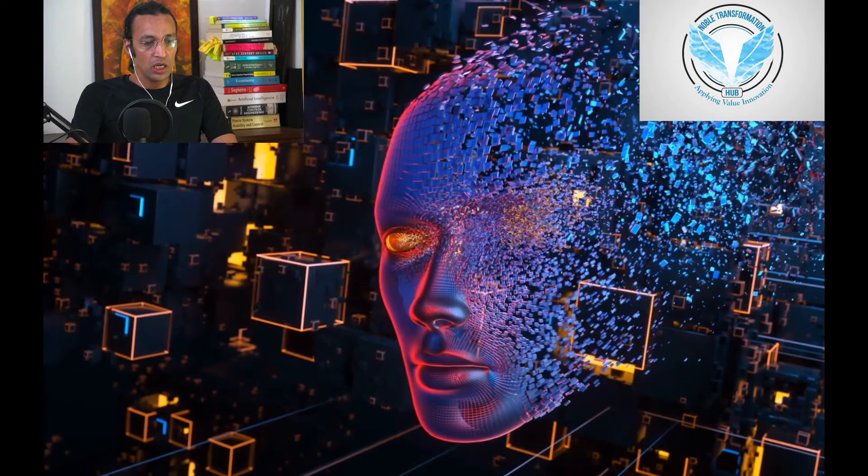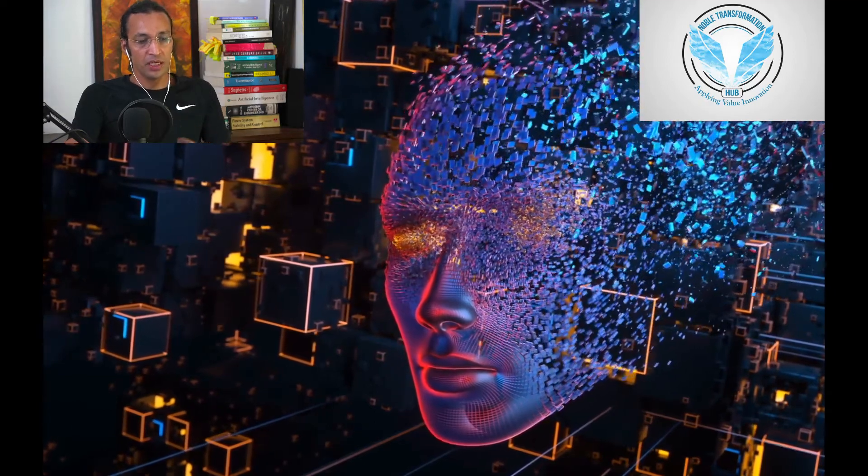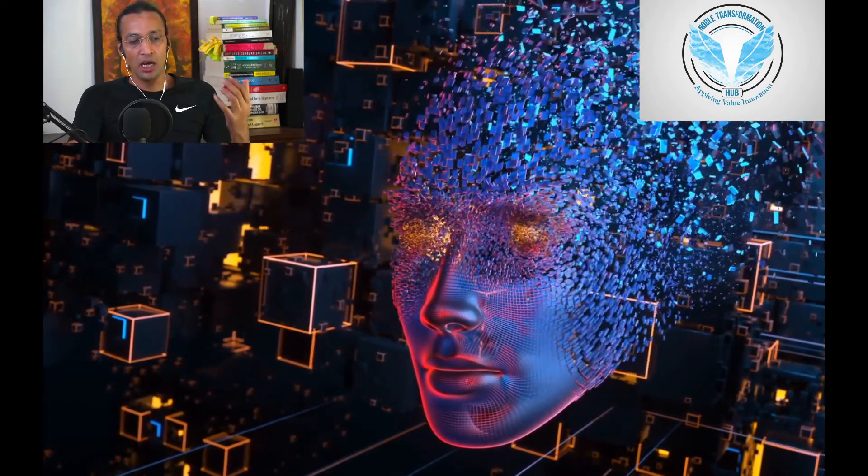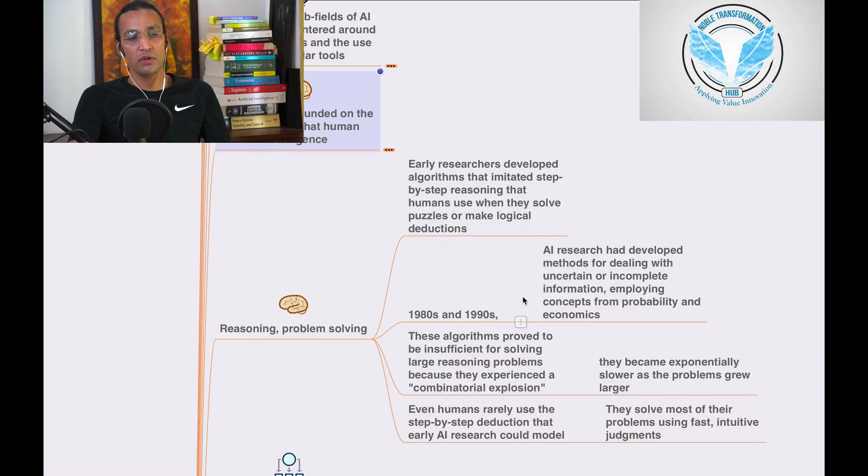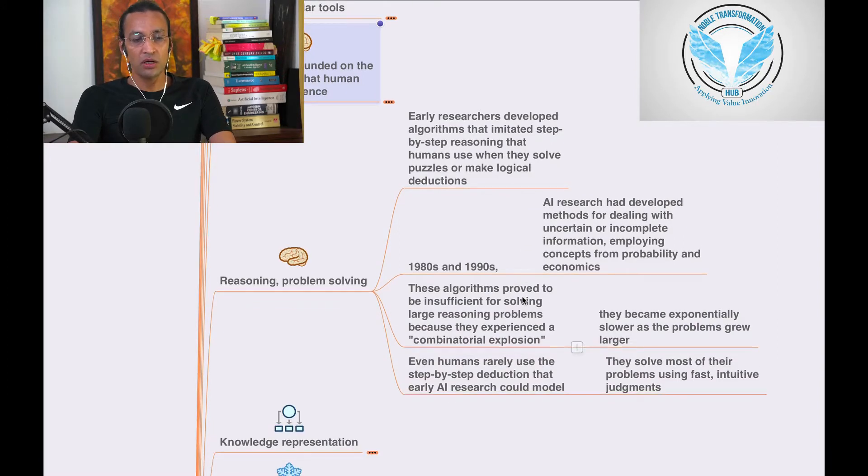Reasoning in AI, reasoning and problem solving, is part of it. Early researchers developed algorithms that imitated step-by-step reasoning that humans use when they solve puzzles or make logical deductions.